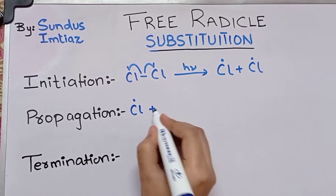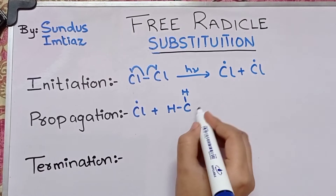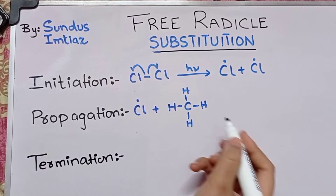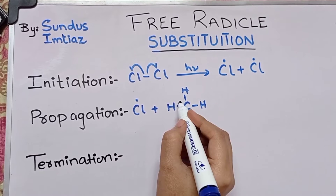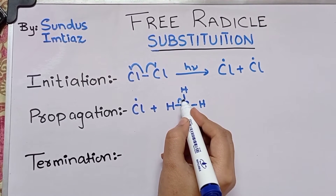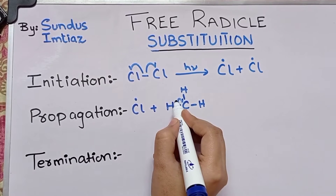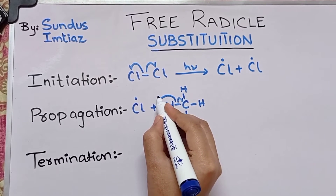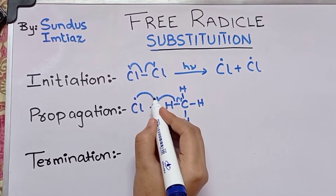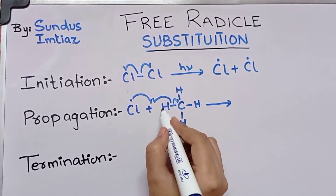This chloride free radical will substitute the alkane. One electron will move towards the carbon atom and one electron will bond with the chloride radical, forming HCl.